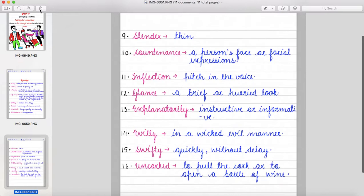Ninth, slender, that means thin. Tenth, countenance, that means a person's face or facial expressions. Then inflection, pitch in the voice. Then glance, a brief or hurried look. Then explanatorily, that means instructive or informative. Then evilly, in a wicked evil manner.